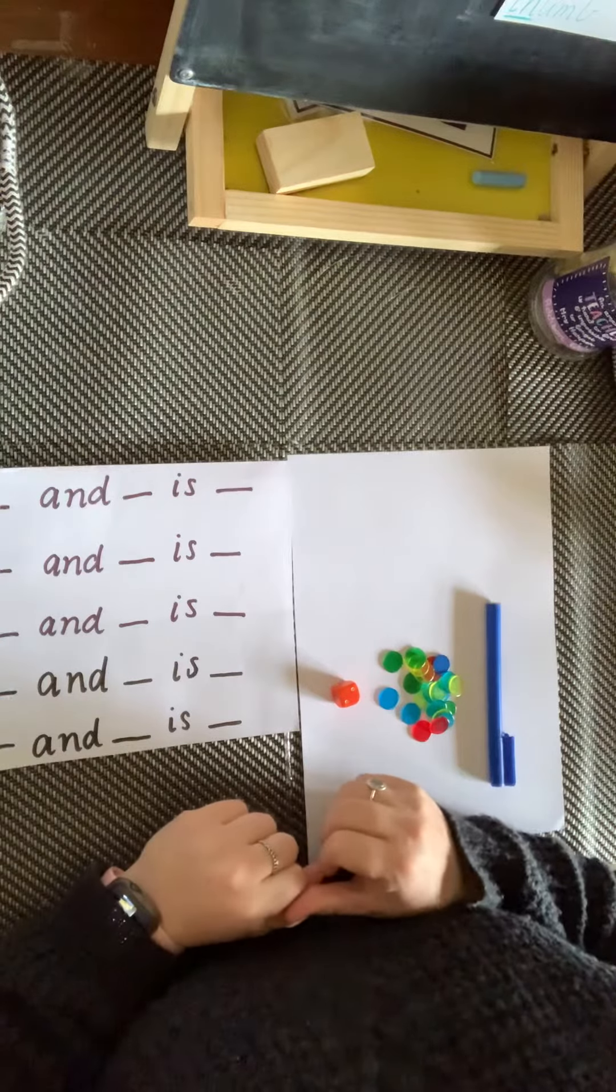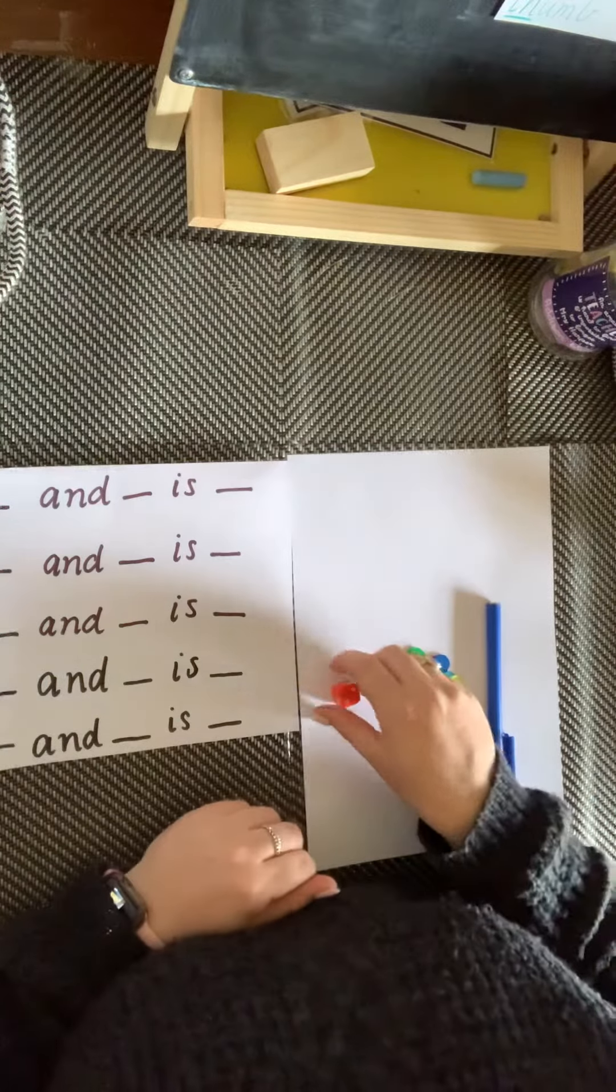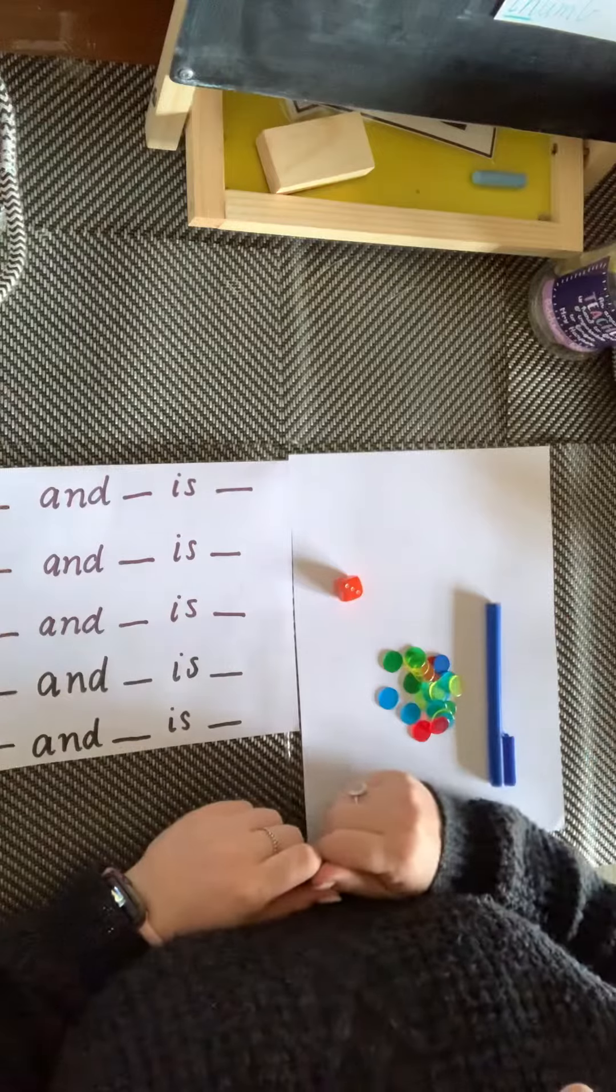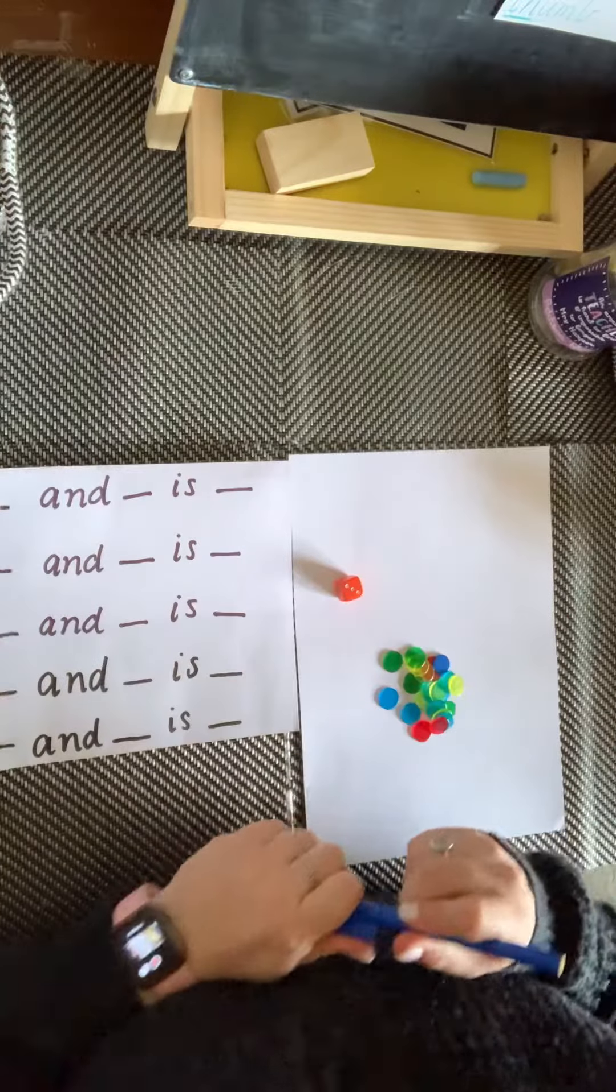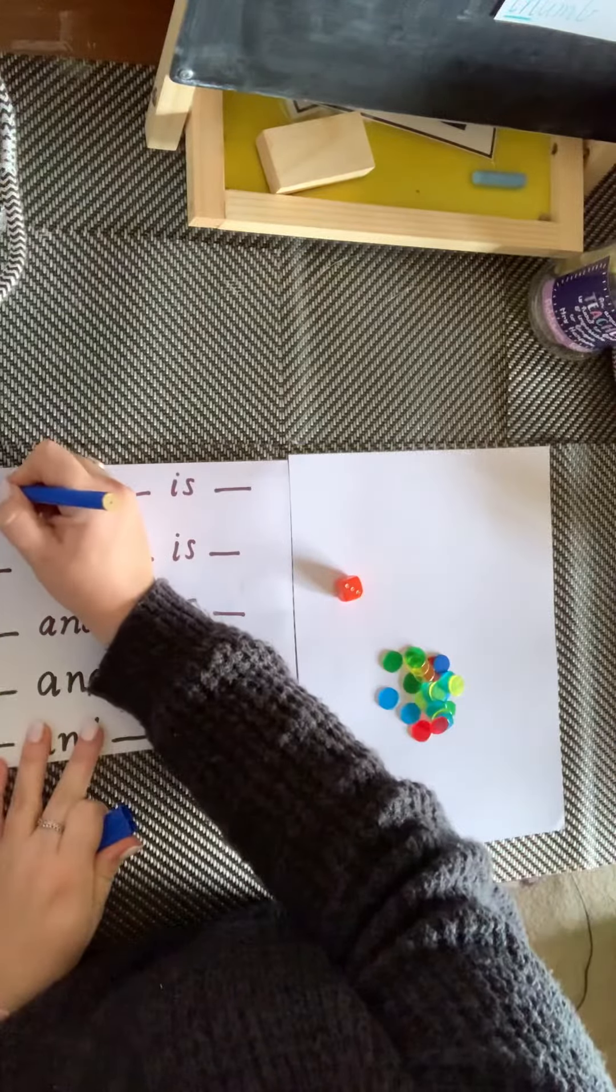This is the roll and add task and I'm going to show you how to do it. First we roll the dice. Say the number three and write the number in the first space.